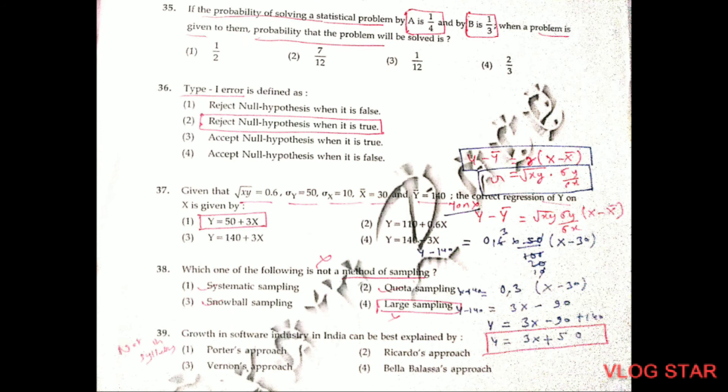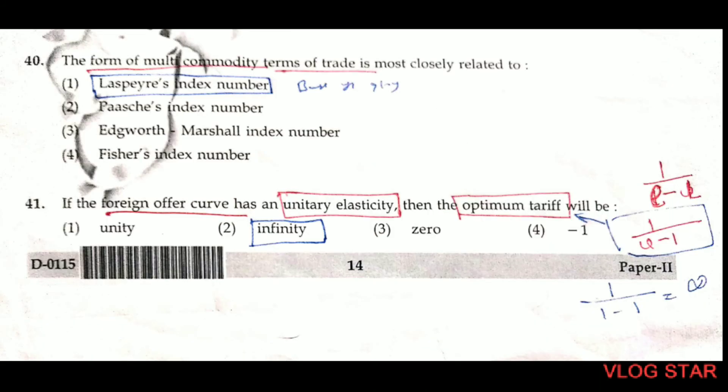Question number 39 is not in the syllabus, but the first option — Potter's approach — is the correct answer. Question number 40. The form of multi-commodity terms of trade is most closely related to the Laspeyres index method, which uses base-year quantities. Question number 41. If the foreign offer curve has unitary elasticity, using the optimum tariff formula t = 1/(e − 1): with e = 1, we get 1/(1−1) = 1/0, which equals infinity. So the correct answer is infinity.